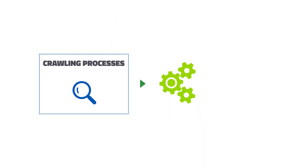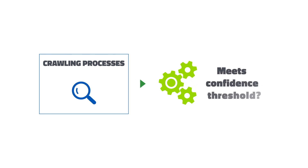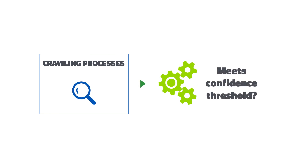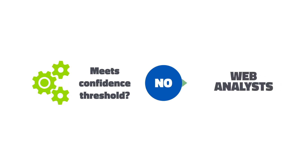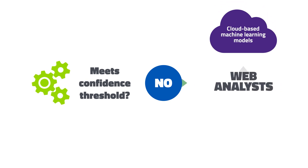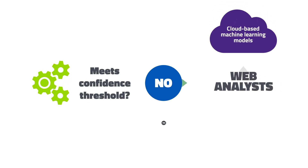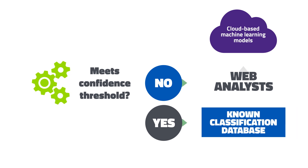In addition to making a classification, the Webroot platform also indicates its confidence in its own determination. Low-confidence scores trigger further evaluation by human analysts to feed back into the machine learning models. High-confidence scores are fed back into the known classification database for immediate use.